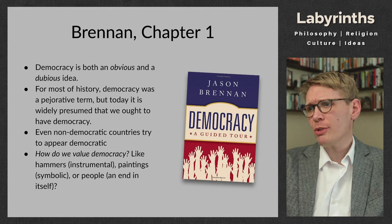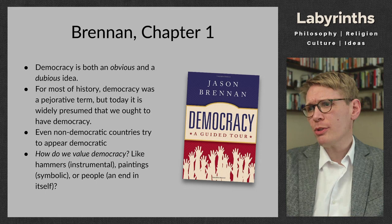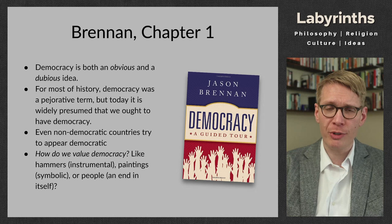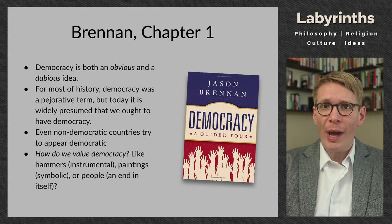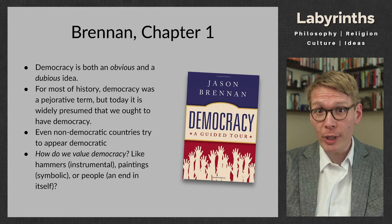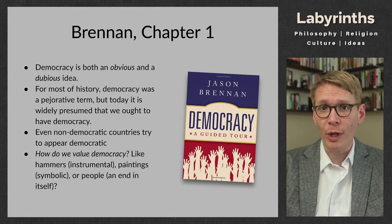Brennan introduces a really helpful three-part illustration of different kinds of value. The question he asks is: how do we value democracy? Not whether we should or shouldn't, but in precisely what way. He presents the images of a hammer, a painting, and a person. A hammer is instrumentally useful — a good hammer will hammer a nail, a bad hammer will not. I value a hammer if it does what it is purported to do.